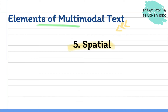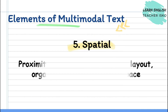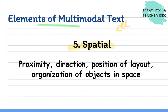The fifth and last element of multi-modal text is spatial. As the name implies, spatial mode refers to proximity, direction, position of layout, and the arrangement of objects in space.